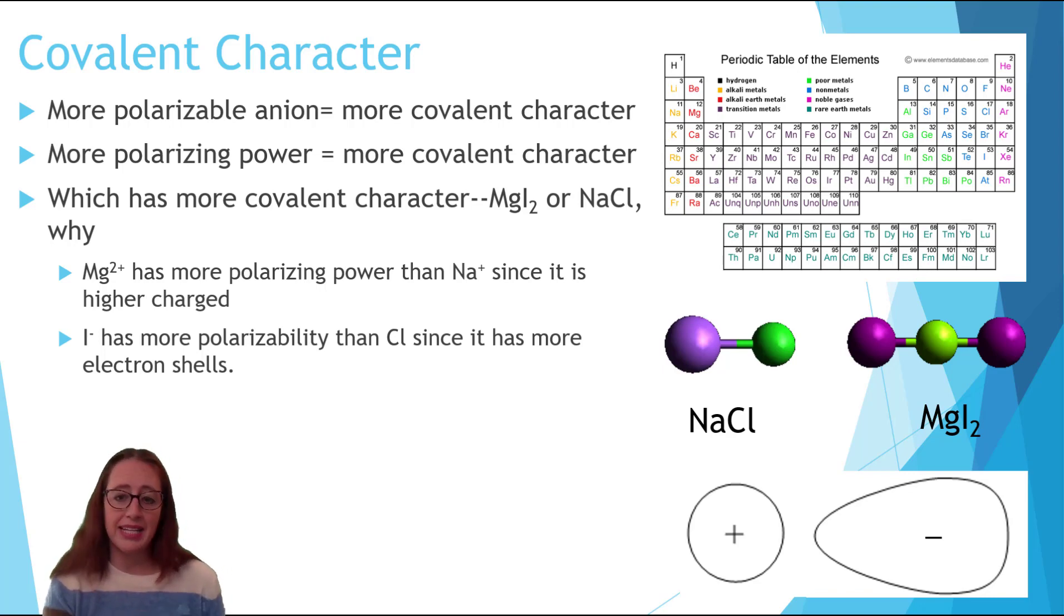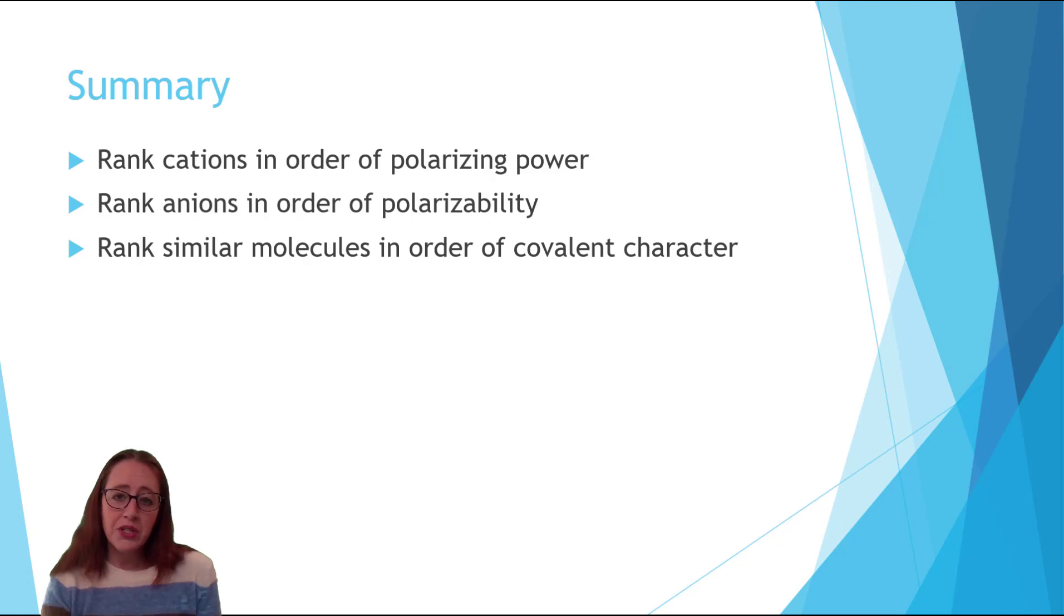As usual with trend questions, I don't ask ones that go against the trend, and so I'll always ask ones that point in the same direction. You should now have a better understanding of how to rank cations in terms of polarizing power and ions in terms of polarizability, and then using these combined concepts, decide which compounds have more covalent character.